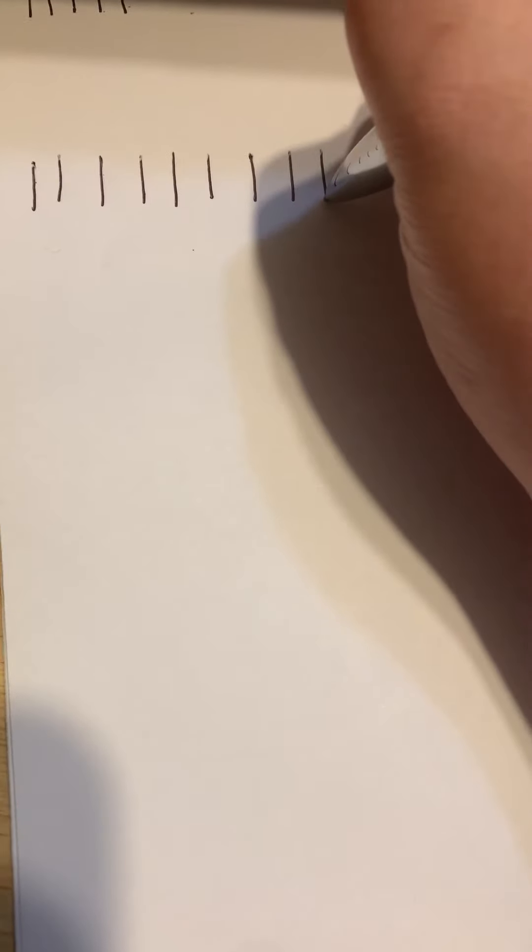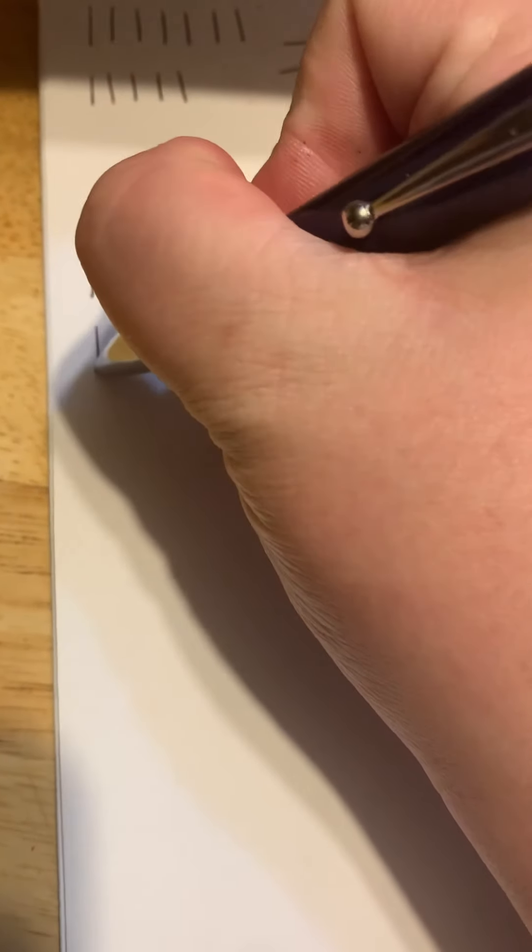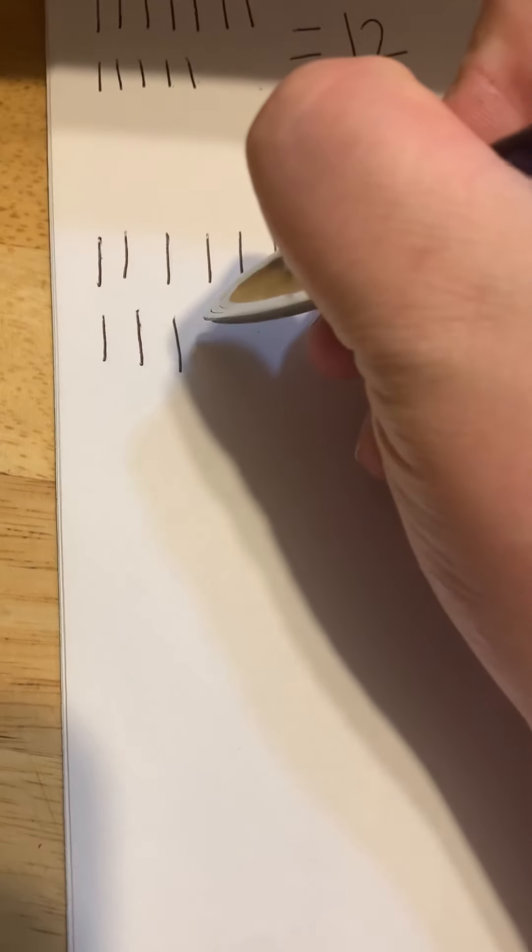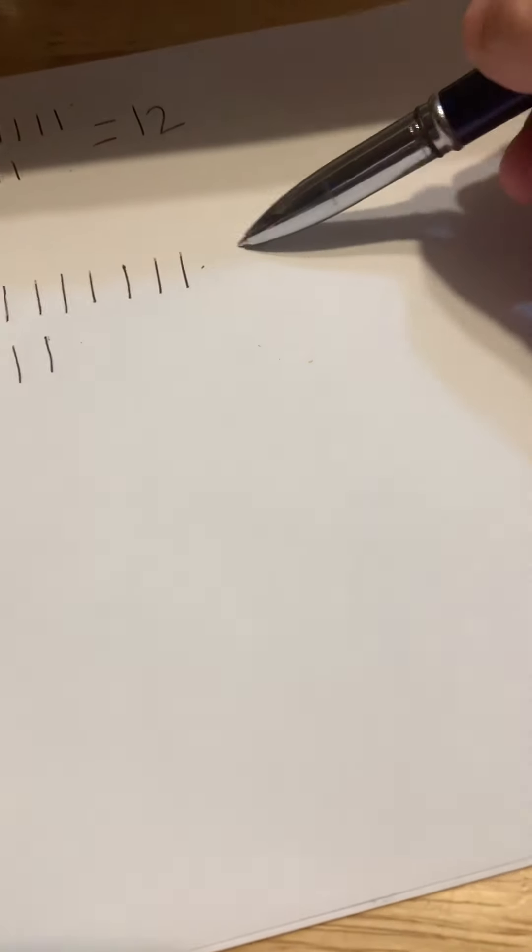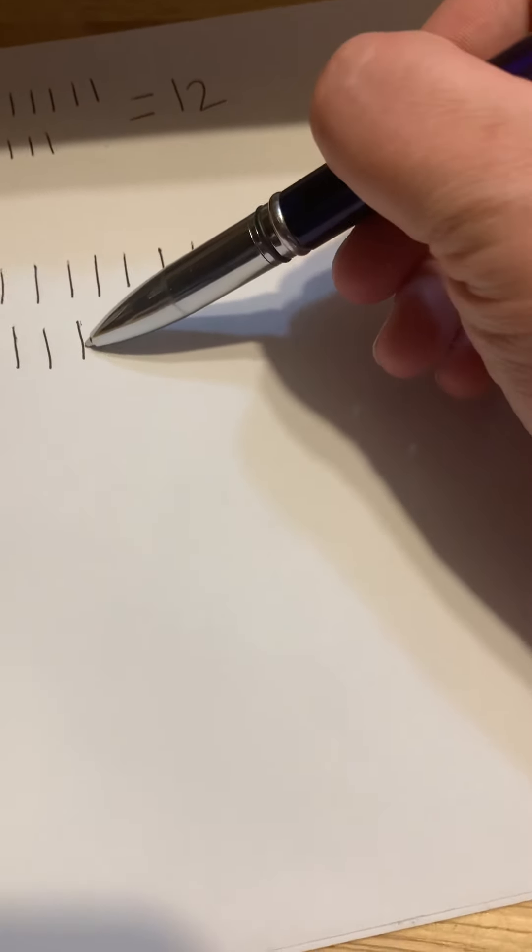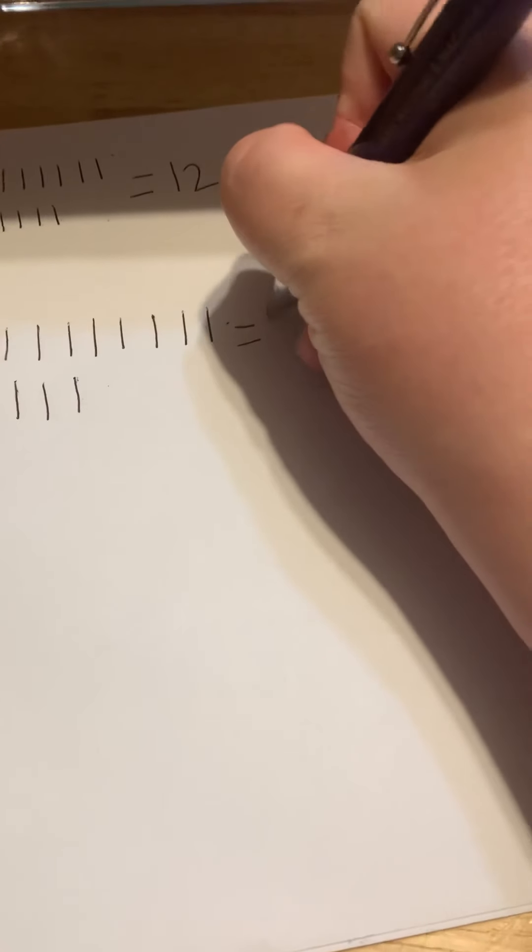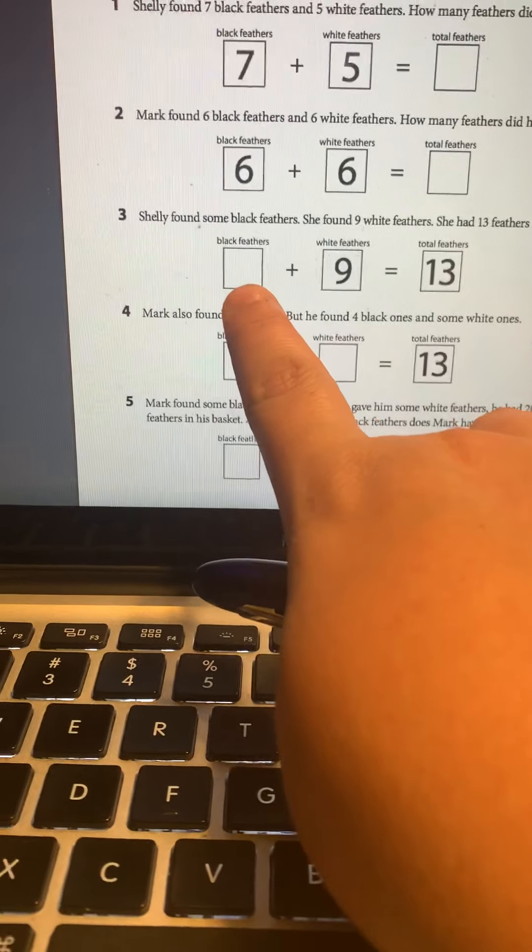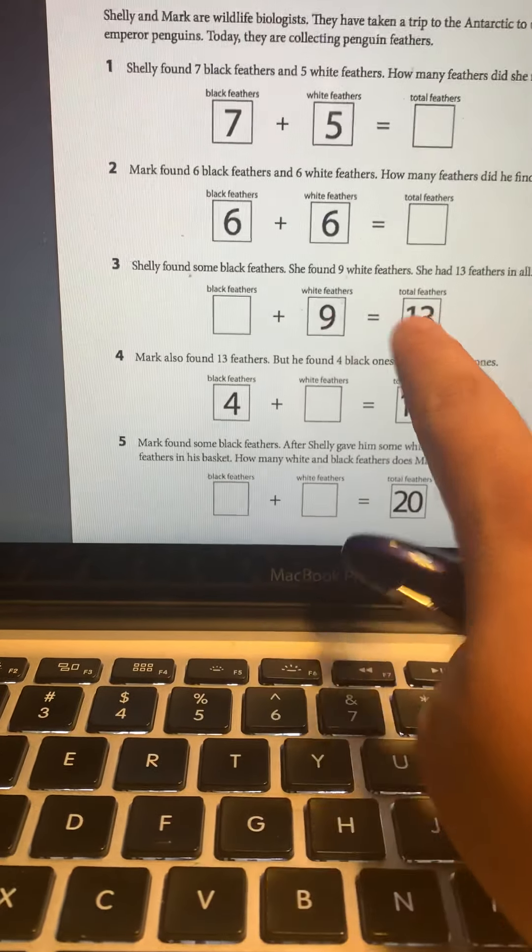One, two, three, four, five, six, seven, eight, nine. I'm going to count on until I get to 13. So I have nine, 10, 11, 12, 13. So nine plus one, two, three, four equals 13. I would put that right there. Put four right there. Four plus nine equals 13.